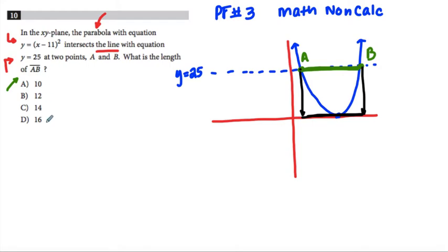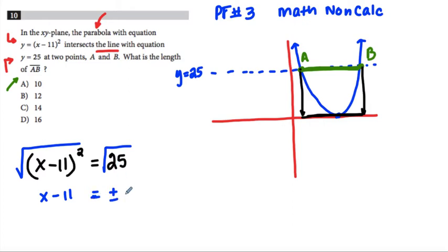So you use substitution. We can set x minus 11 squared equal to 25. Okay, and we can solve this. So because this is being squared, I can take the square root. I can do the inverse operation, the square root of both sides. Now, if you do that, you have to remember that that square root of 25, it could be both positive or negative. So we would have plus or minus 5.